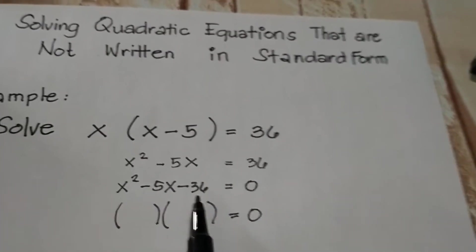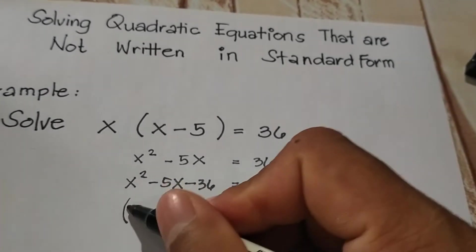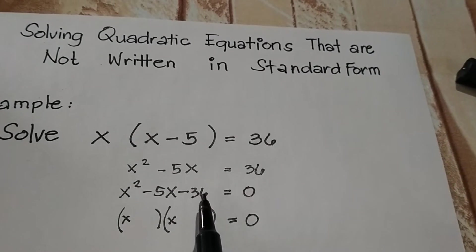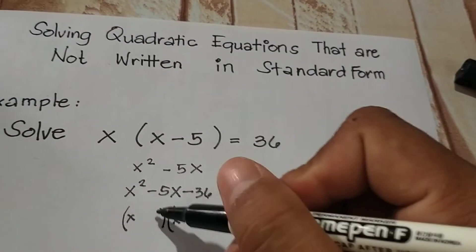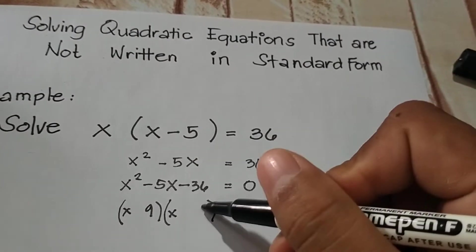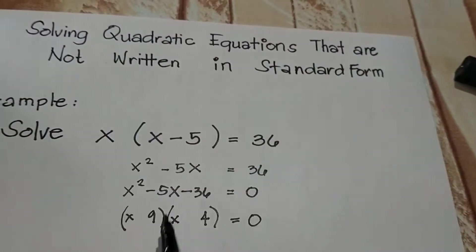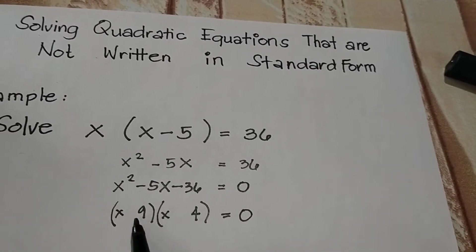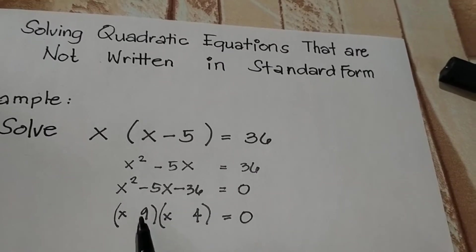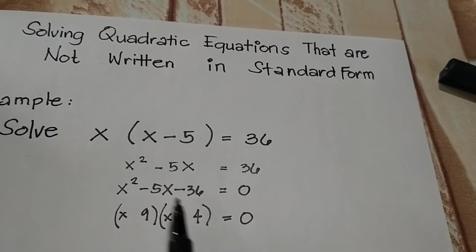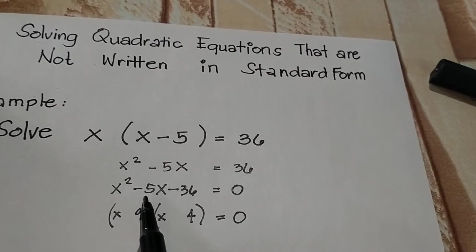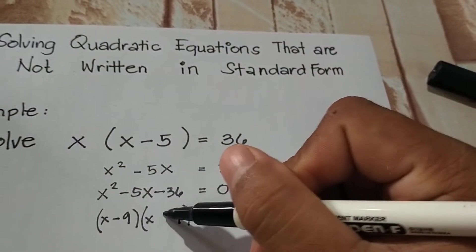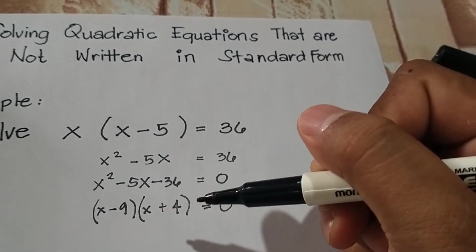We will factor this side. For the factors, we would have x and x. For the factors of 36, we would have 9 and 4. The product of 9 and 4 is 36, and when we combine them, the result should be negative 5. So therefore our signs would be negative 9 and positive 4.